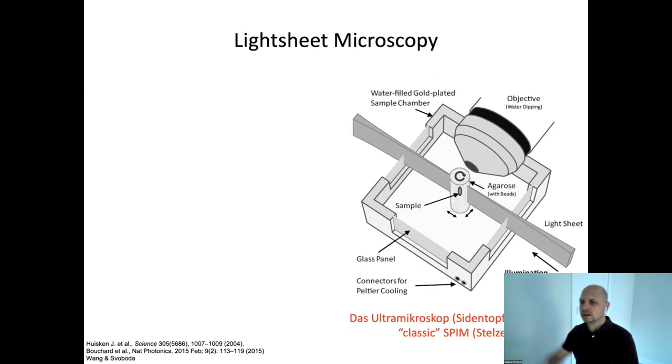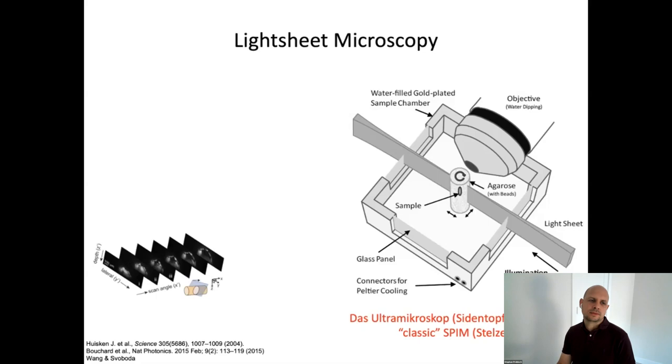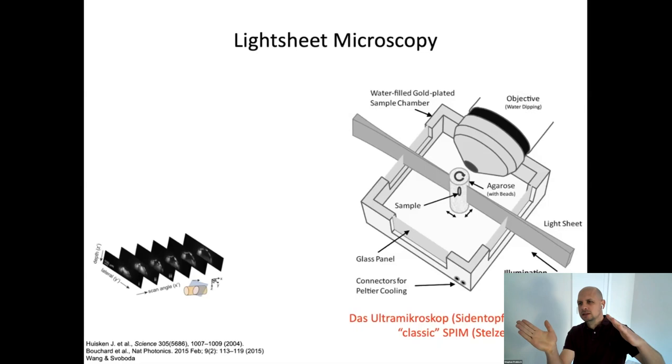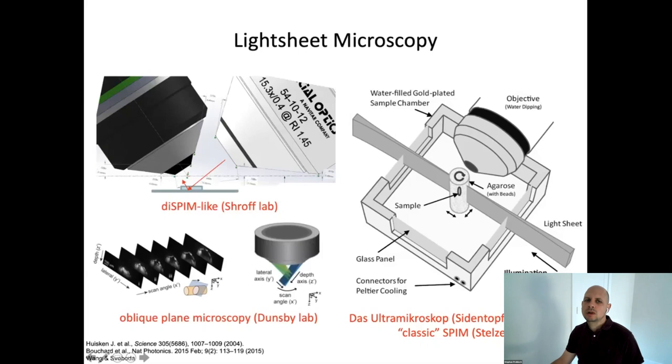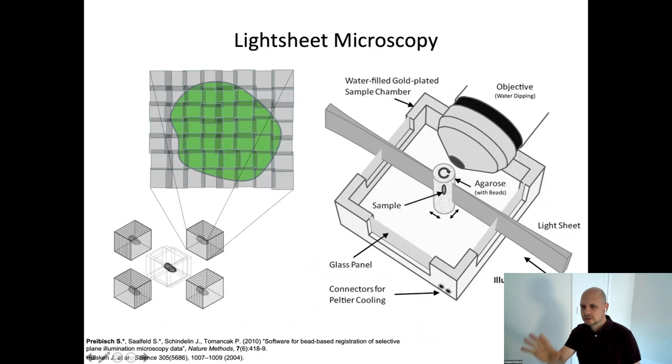This is the classical light sheet design where you put your sample in front of the objective. A light sheet comes from either side, illuminates the sample left and right, and you move your sample through the light sheet to take a 3D stack. You can rotate your sample, turn it around, and take images from different orientations doing multi-view microscopy. So here you get normal 3D stacks that you need to reconstruct.